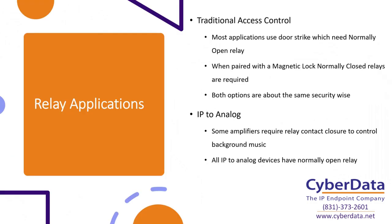The two main relay applications we'll talk about are traditional access control and IP-to-analog solutions. In traditional access control, you're going to use a door strike, which uses a normally open style relay. The more common option is a door strike where when the system is not engaged — not electrified — it's in the locked position. You engage it, electrify the system, complete the circuit, and the door is unlocked. This is the most traditional option because it doesn't require any energy to stay in the physical locked state.